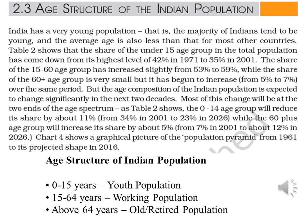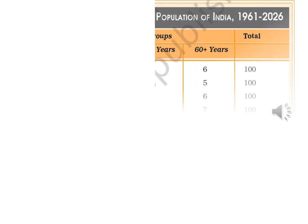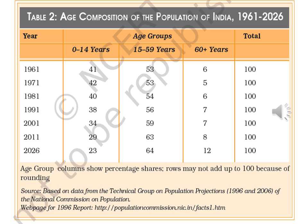Chart 4 shows a graphical picture of the population pyramid from 1961 to its projected shape in 2026. Students, on page number 22, table 2 tells us about the composition of the population of India from 1961 to 2026. It gives us an estimated percentage of people falling in all three age groups, based on data from the technical group on population projection of the national commission on population. In 1961, there were 41 percent in the youth population, 53 percent was the working population, and 6 percent was the dependent population.